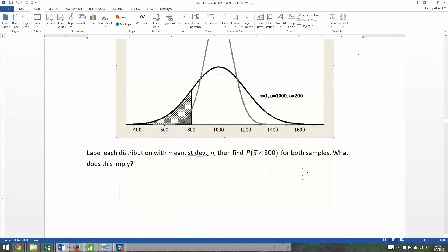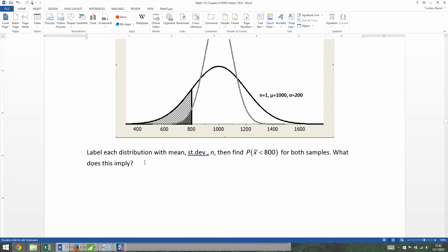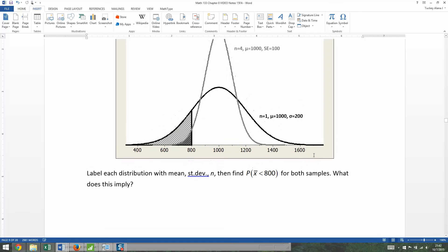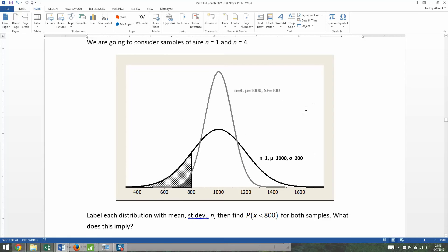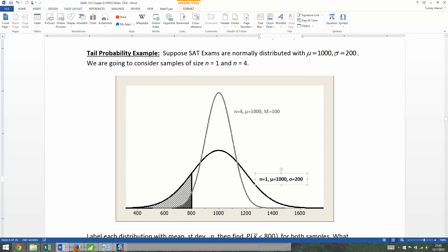First thing they want us to do is label each distribution with mean, standard deviation, n, and then find the probability that X bar is less than 800 for both samples. I've already labeled them right here, but I want to show you where it came from. Our original standard deviation is 200. The original standard deviation is for the population, and that holds for when n equals 1. That's why this one right here says sigma is 200 because that has the full spread. This black curve right here is the population curve.